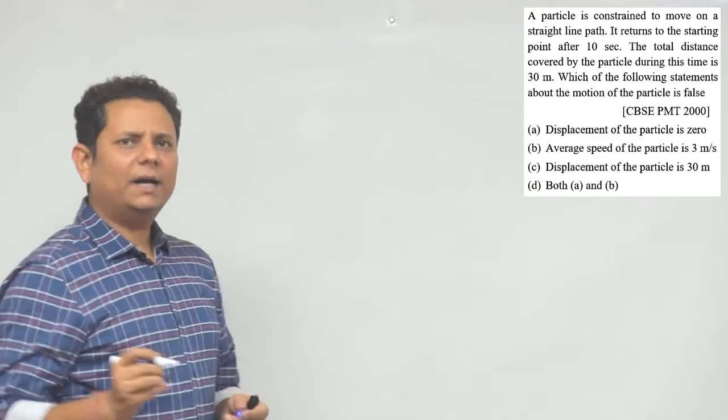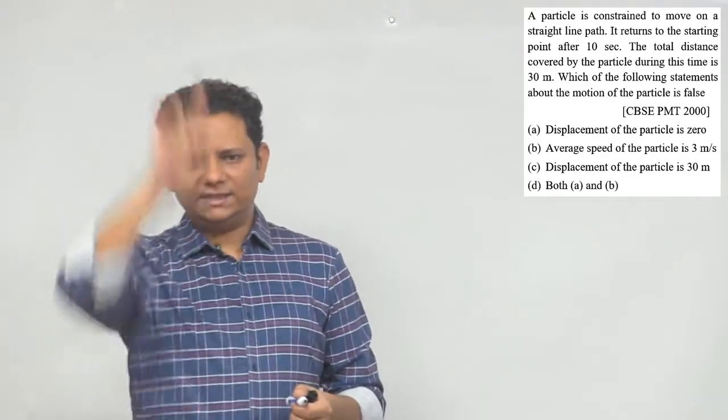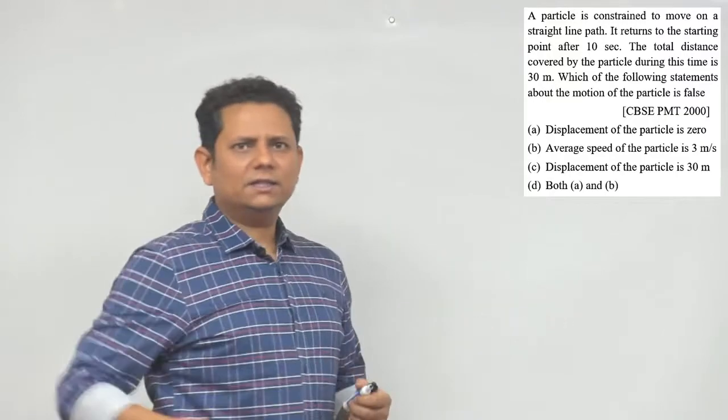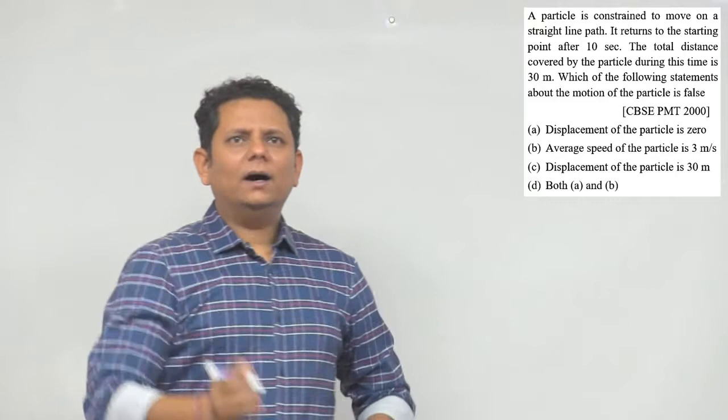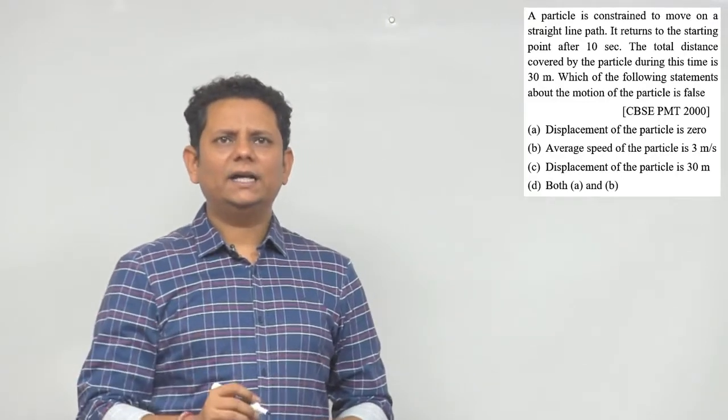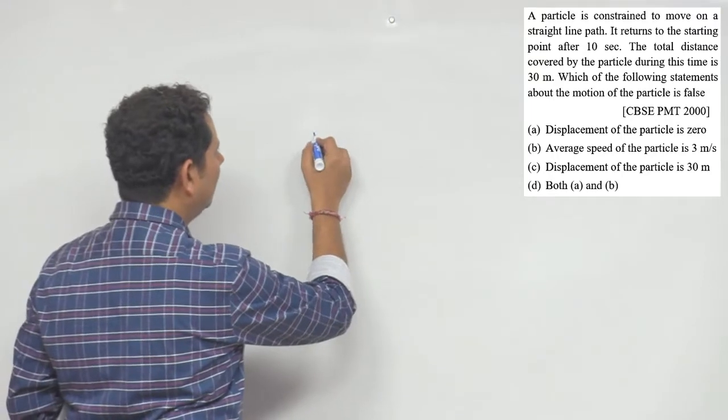Sawal simple hai, situation ko samajhenge. A particle hai jo one dimension motion mein ja sakta, yaani ki motion constrained hai. To aise se maan le, ki sirf horizontal ya vertical ya kisi bhi dimension move kar sakta hai. 10 second baad woh aapni jagah par hai. Total distance covered 30 hai. So particle yaha se chala, yaha tak gaya, phir waapis aa gaya.